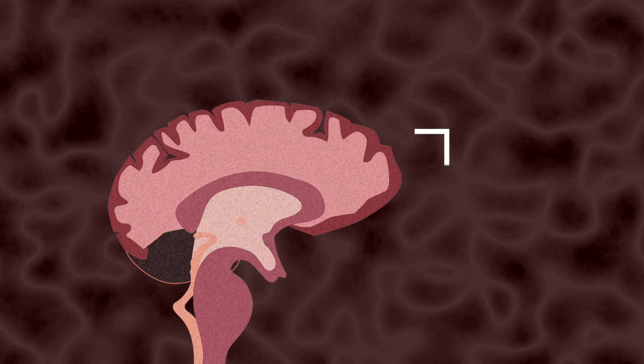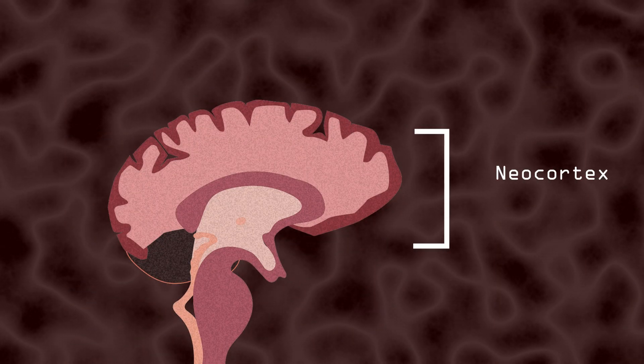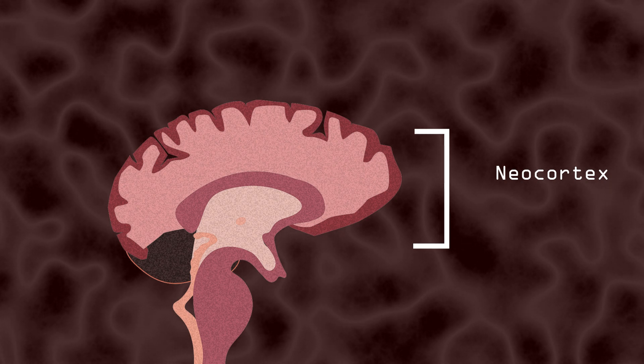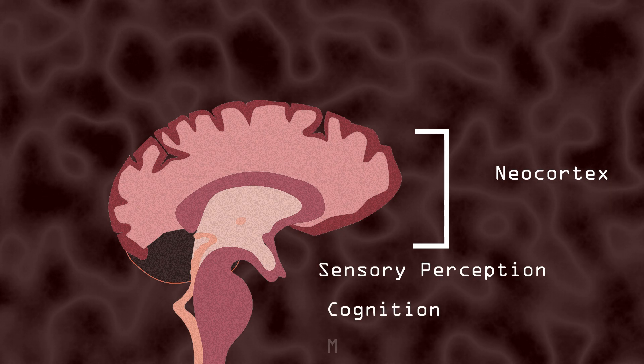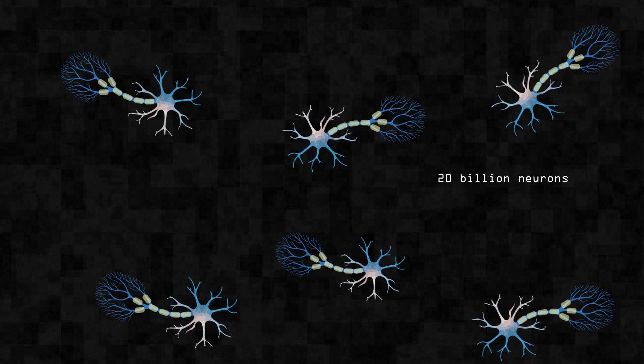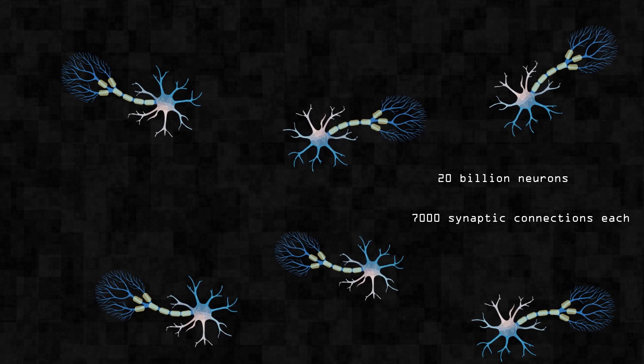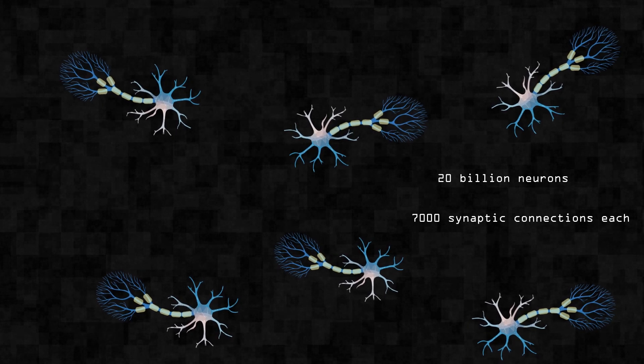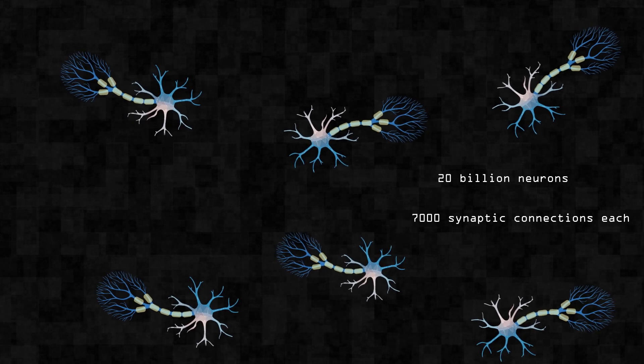Our thoughts and memories reside in the neocortex, the outermost layer of the brain responsible for higher order functions such as sensory perception, cognition, and memory. Estimates suggest that there are about 20 billion neurons in the neocortex, each with around 7,000 synaptic connections, amounting to roughly a trillion synapses for every cubic millimeter of cortex.